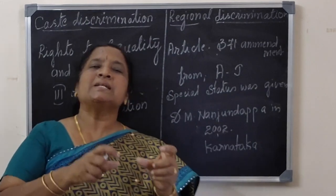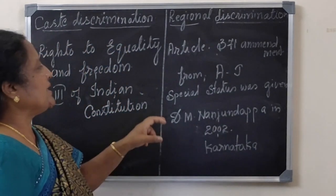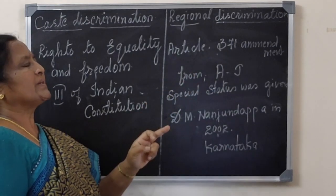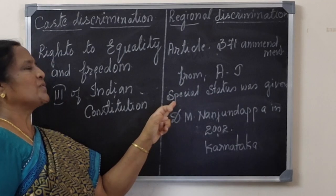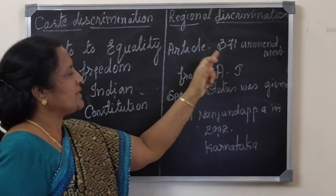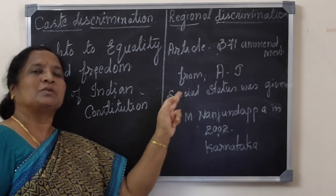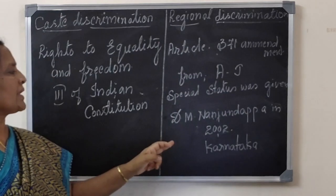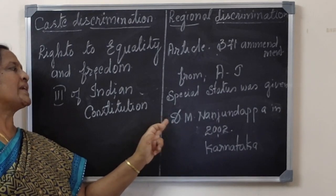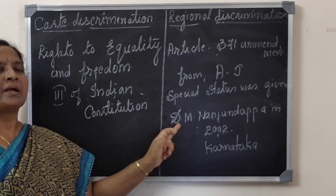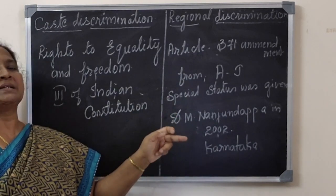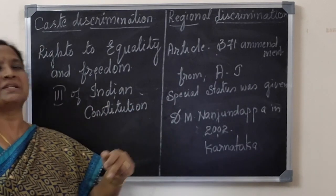How do we bring regional balance? The Government of India has taken certain measures. Under Article 371, amendment from A to J, special status was given to all regions which are not yet developed. In 2002, in Karnataka exclusively, a commission was held under the leadership of D.M. Nanjundapa. Based on the report of this commission, suitable measures were provided to reduce regional imbalances.